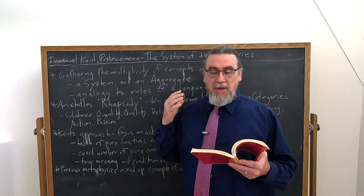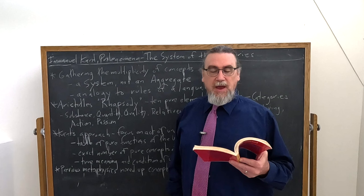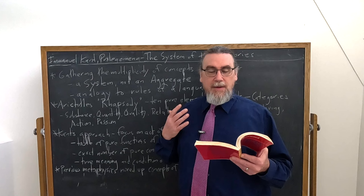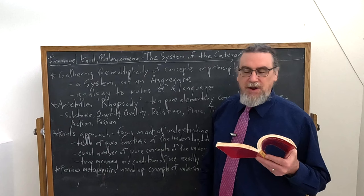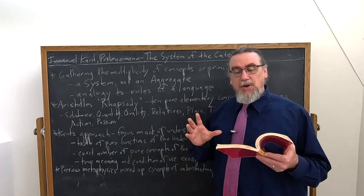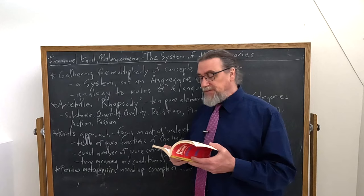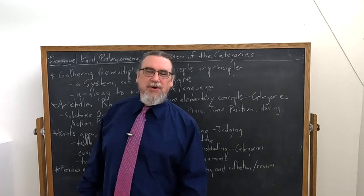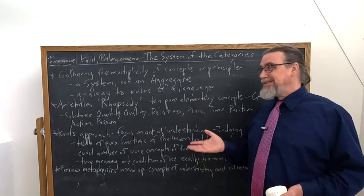Kant says: to these, which were also called predicaments, Aristotle found himself obliged to add five post-predicaments, some of which are contained in the former. But this rhapsody must be considered and commended as a mere hint for future inquirers, not as a regularly worked-out idea. And so it has been in the present, more advanced state of philosophy: rejected as quite useless — rejected by some, still used by others. Kant is going to be one of the rejecters, because he says it's not systematic.